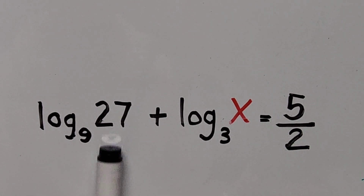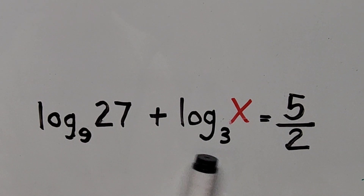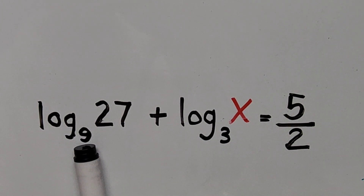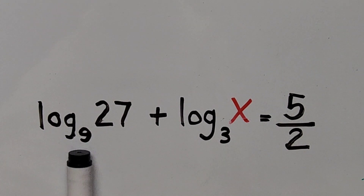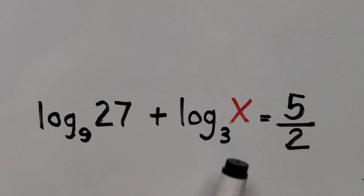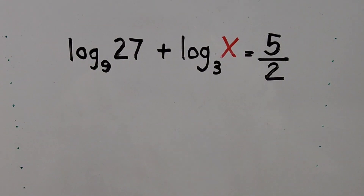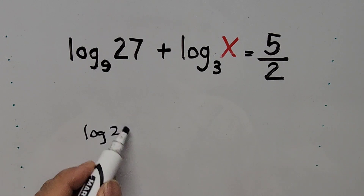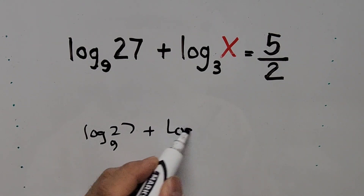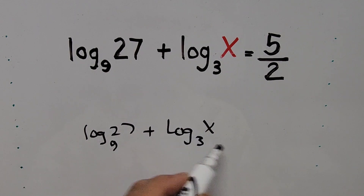The first term has base 9 and the second term has base 3. Similar to solving exponential equations, we can convert terms into the same base. Since the first term has base 9, we need to convert it to base 3 using the change of base formula. We rewrite the equation: log of 27 base 9 plus log of x base 3 equals 5 halves.